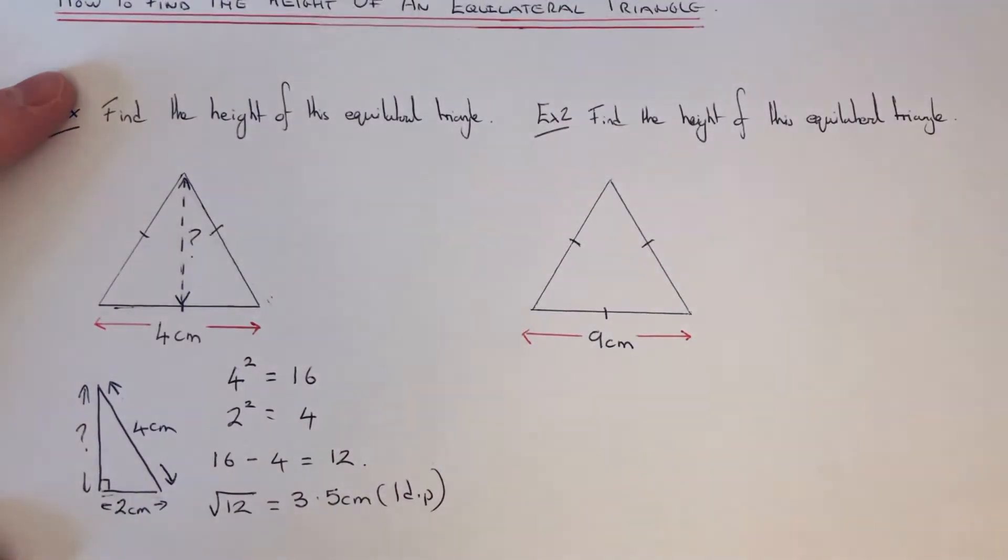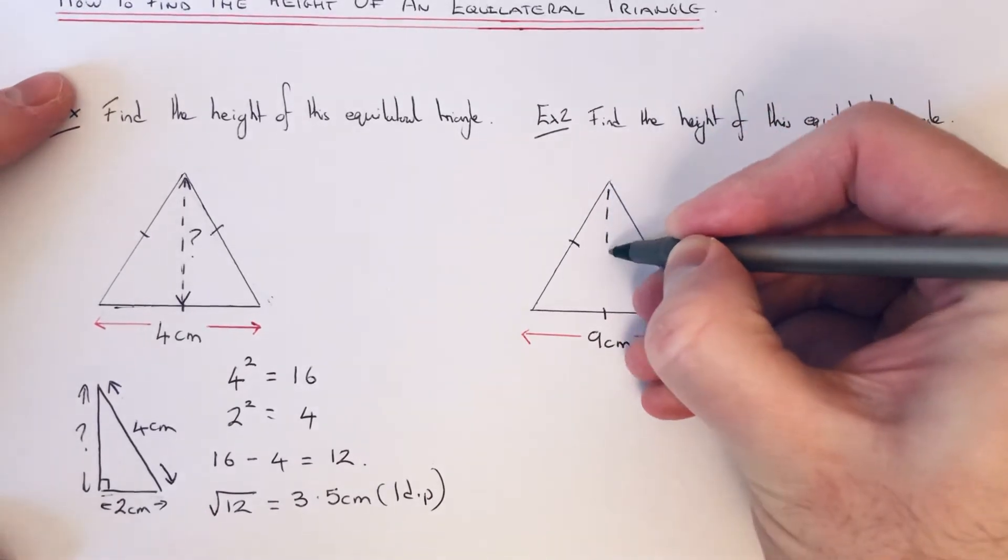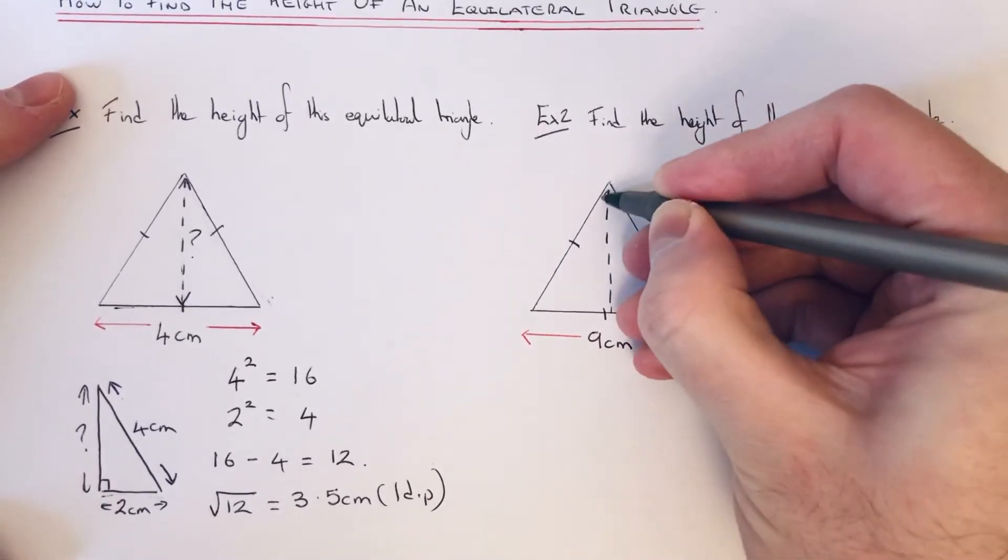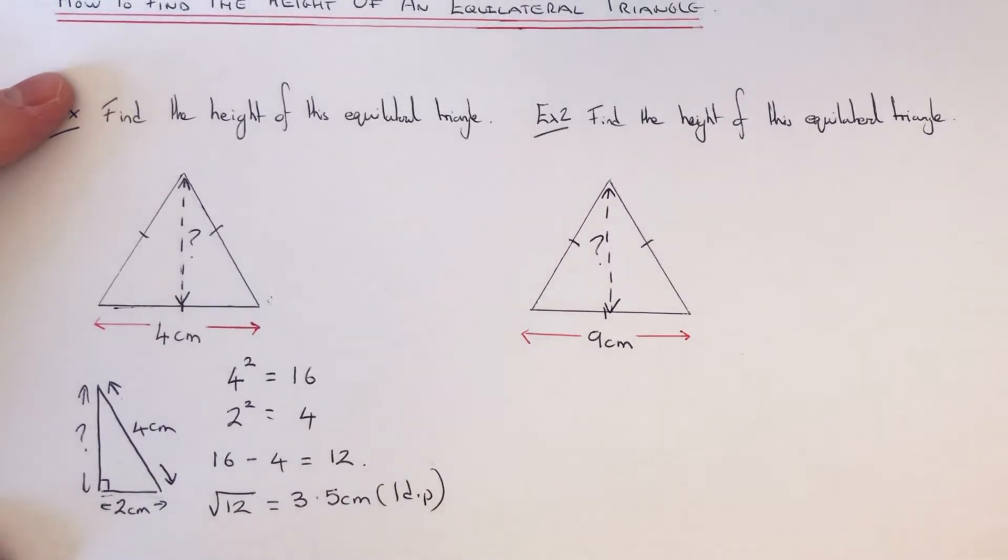So let's move on to the second example then. So this time we've got an equilateral with side length nine centimeters. So again we're asked to find the vertical height, this length here. Okay, so let's draw out the right angle triangle again so we can use Pythagoras.